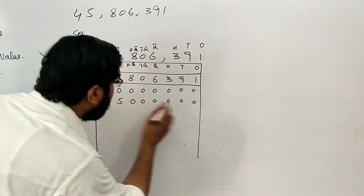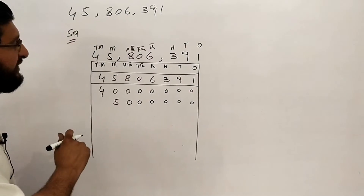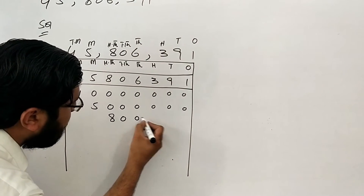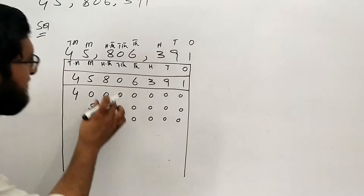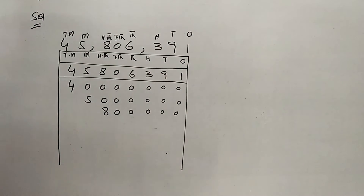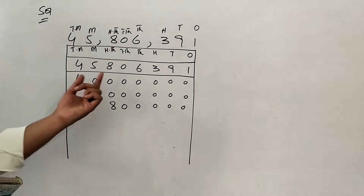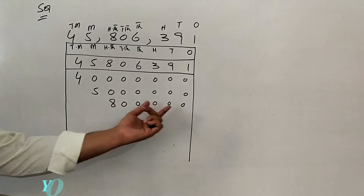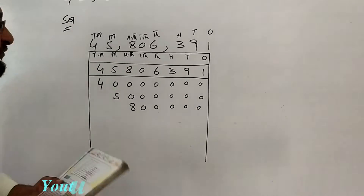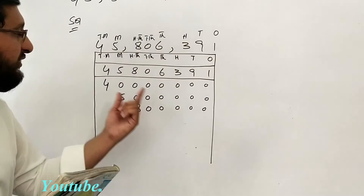We write the expanded form. The digit 0 is in the ten thousands place, so 0 times 10,000 equals 0 — we ignore zeros in expanded form. Then 6 is in the thousands place: 6 times 1,000 equals 6,000. Then 3 is in the hundreds place: 3 times 100 equals 300.